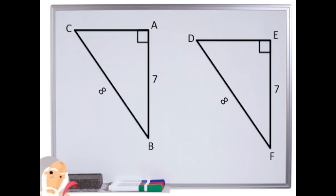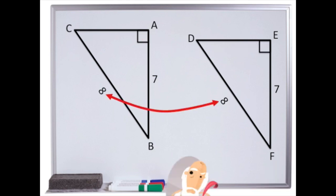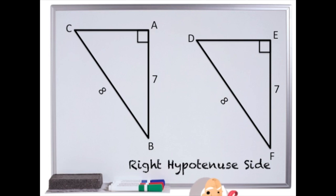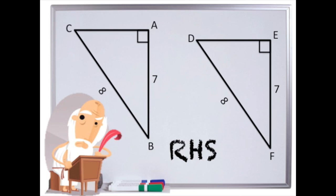The last proof that we need to talk about is only for right angle triangles. To prove that these triangles are the same, we need to have a right angle on both. The hypotenuse needs to be the same on both. Remember the hypotenuse is the opposite side to the right angle. And one other side also needs to be the same. This proof is called right hypotenuse side, or in shorthand, RHS.